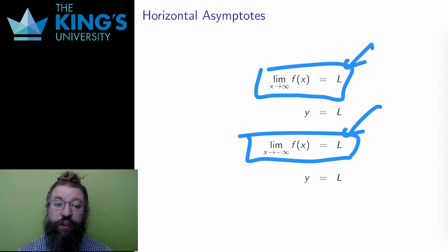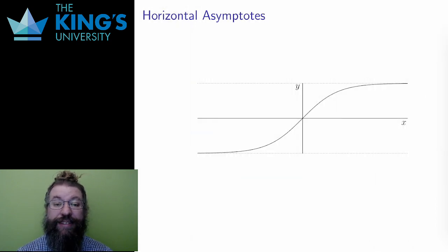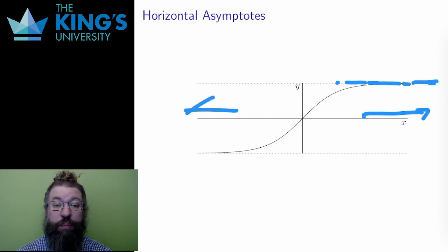This graph shows a function with two horizontal asymptotes. As x approaches infinity, the input goes off the graph to the right. The function levels off and approaches a line. As x approaches negative infinity, the input goes off the graph to the left, and the function again levels off and approaches a line.